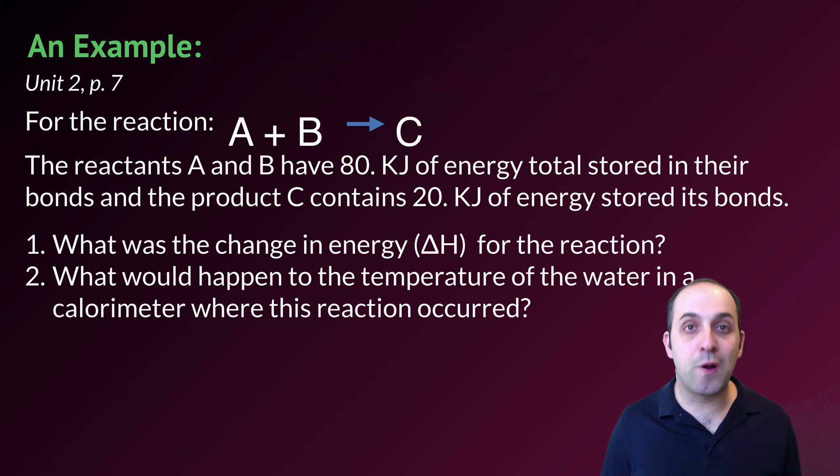Let's take a look at an example problem from page 7 in our unit packet and see if we can use this law of conservation of energy to analyze what's going on. For the reaction A plus B yields C, the reactants A and B have 80 kilojoules of energy total stored in their bonds, and the product contains 20 kilojoules of energy stored in its bonds. The first question is, what was the change in energy or delta H for the reaction? And the second question is, what would happen to the temperature of the water in the calorimeter where this reaction occurred? So this is a two-part problem. Take a moment and try to solve this on your own, and then when you're ready, hit play and let's go through it and see if we can solve it together.